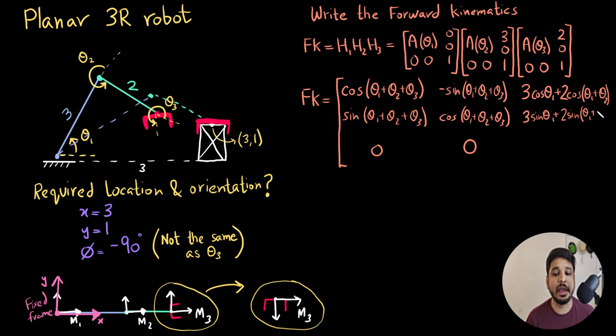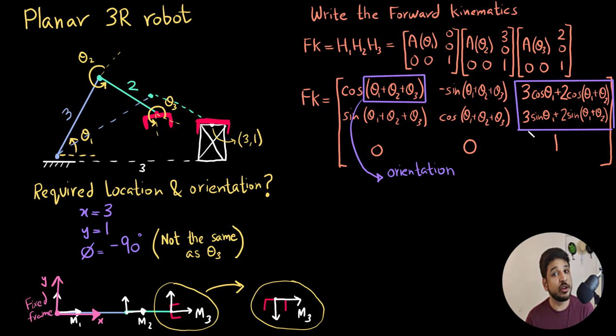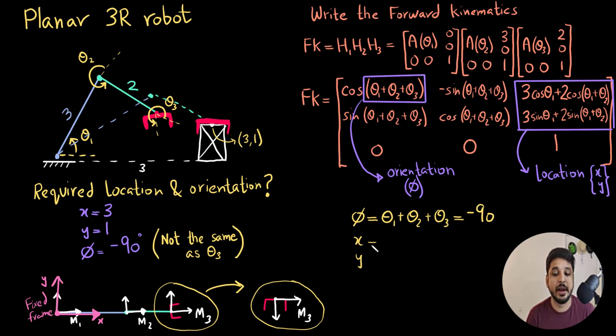Now multiplying them out, I get this matrix right here. I know that this term theta 1 plus theta 2 plus theta 3 is the orientation of the end effector. And these two terms gives me the location of the end effector, which is the x and y coordinates. So what I do now is I just compare the orientation and the location with the required orientation and the location. And I get these following three equations.